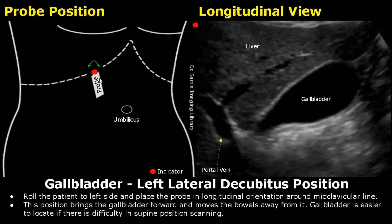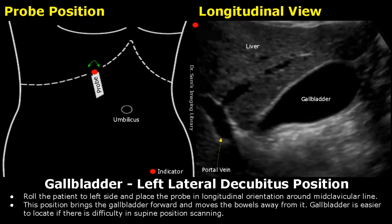This is the left lateral decubitus position. The gallbladder is brought forward and the bowels are moved away from it, which makes it easier for scanning. This approach is very helpful in distinguishing between mobile and non-mobile gallstones or sludge. Always try this approach if you find gallstones, sludge, or polyps.